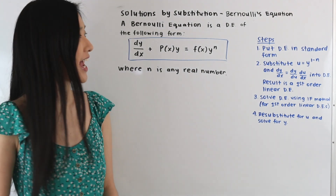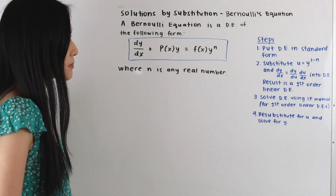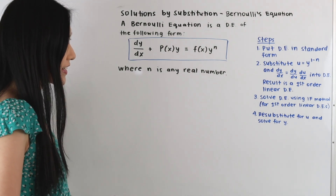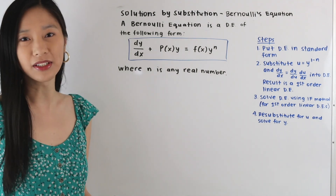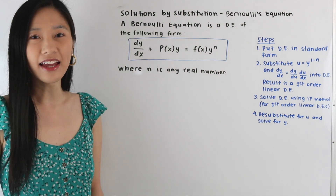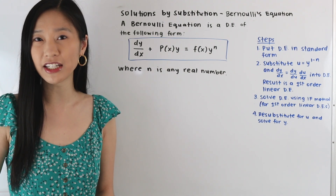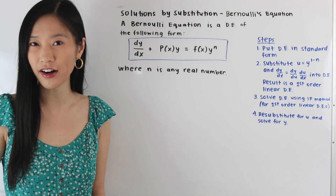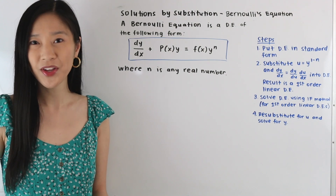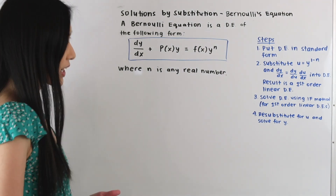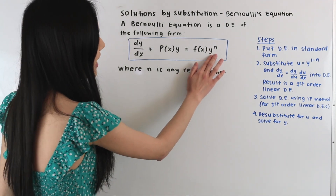So a Bernoulli equation has the following form: dy/dx plus p(x)y is equal to f(x)y to the n, where n is any real number. The Bernoulli equation looks very similar to a differential equation that we've solved before, the first order linear differential equation. The only difference is that on the right hand side we have a nonlinear term, this y to the n.